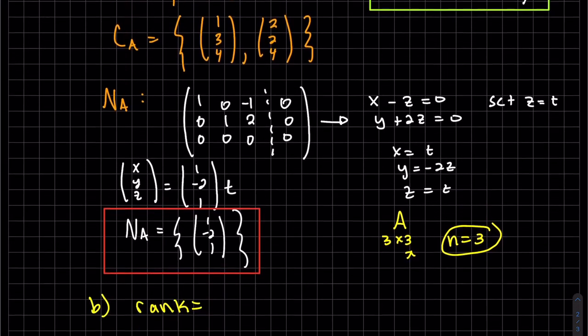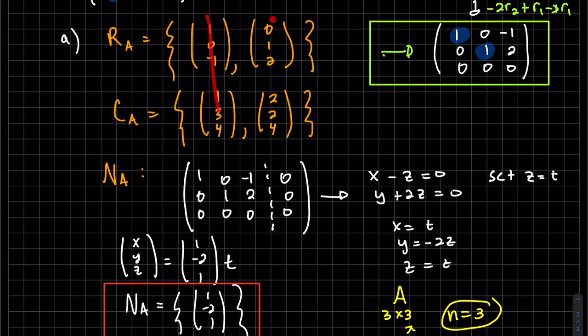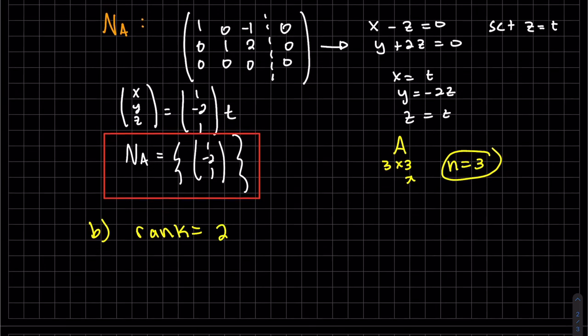My rank is how many are in these two, which is two. My N is three, so my nullity is one.